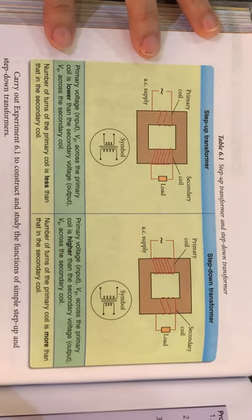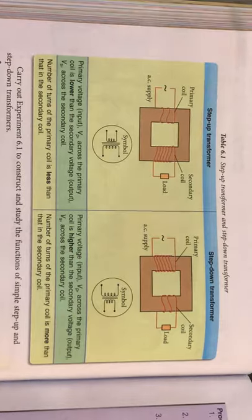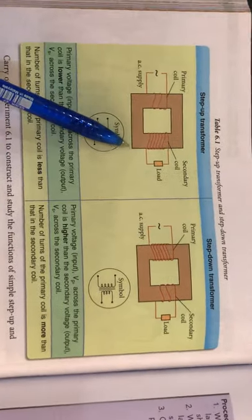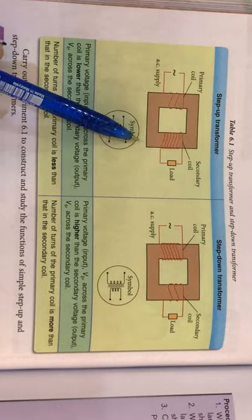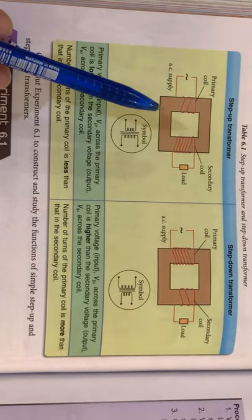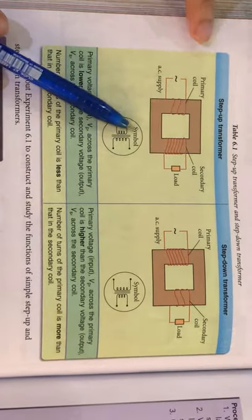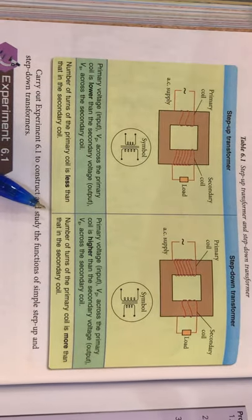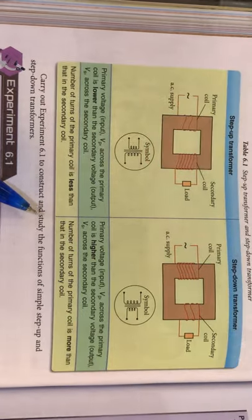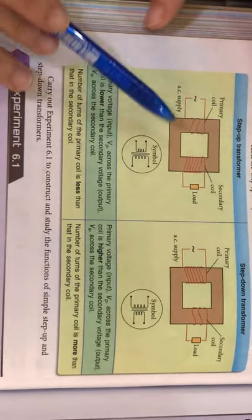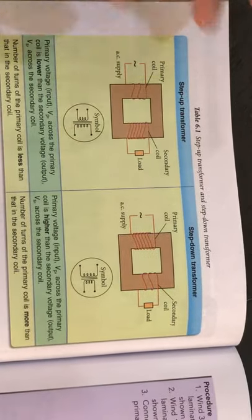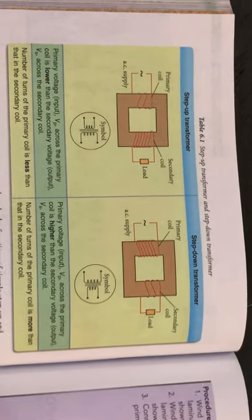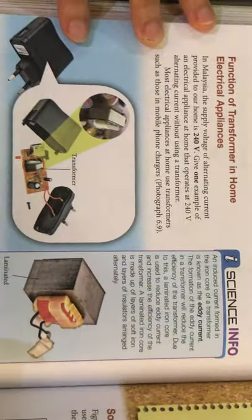Step-up transformer increases the voltage, and step-down decreases the voltage, but both are for alternating current. How does it work? To produce an induced current, we must have a changing magnetic flux. Alternating current keeps changing direction, so there is an overall changing of magnetic flux lines — that's why a transformer can only function with alternating current. Direct current flows in only one direction, so there is no change, no induced EMF, and no induced current.